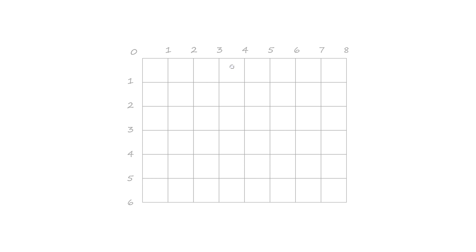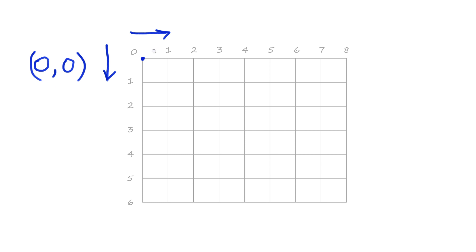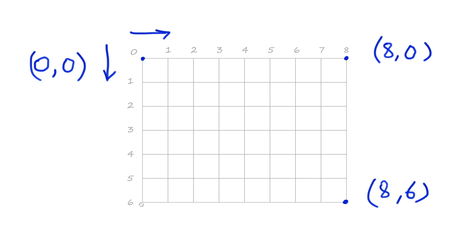Let's practice with some other examples. If I said, where's this point in the top left-hand corner - how do we describe it precisely? How far along is it? Not two along, not one along: it's zero along. How far down? Not two, not one, but zero. So the top left is at zero comma zero. And this point here: eight across, six down - eight comma six. The top right: eight across and zero down, so that's eight comma zero.